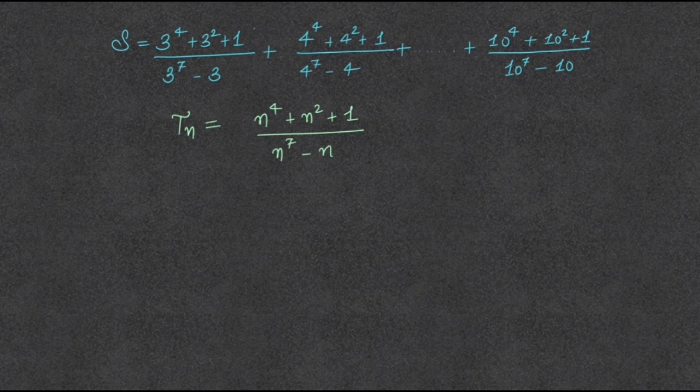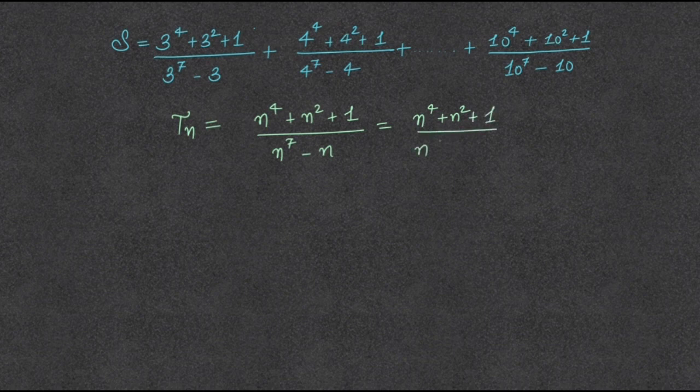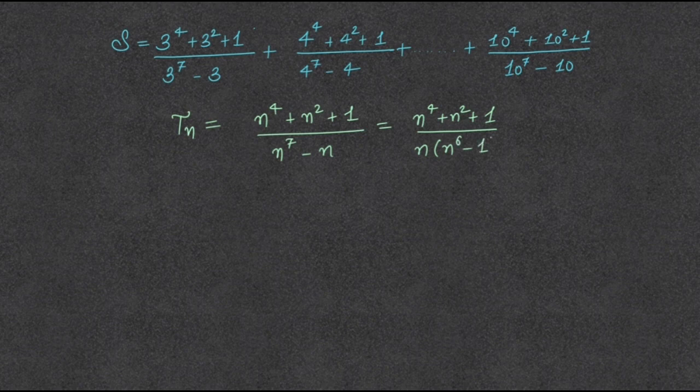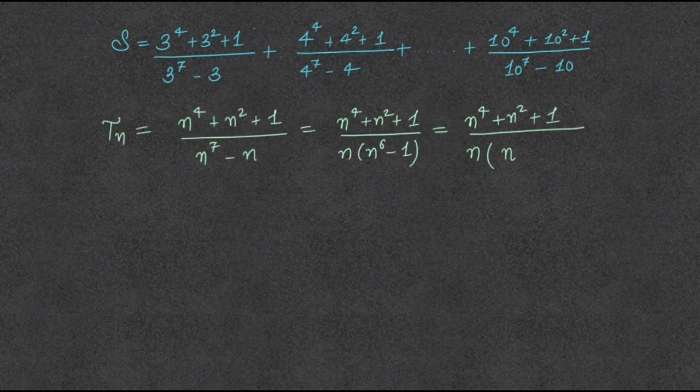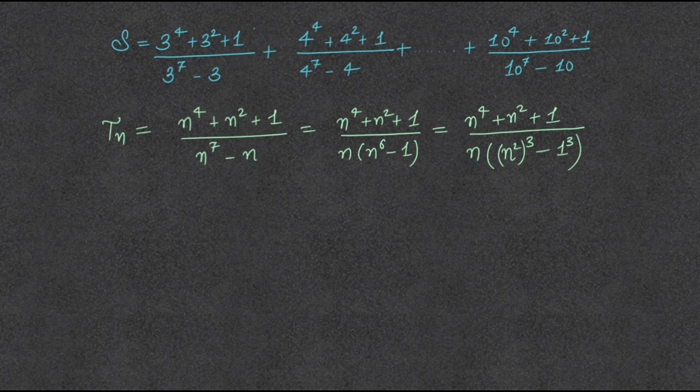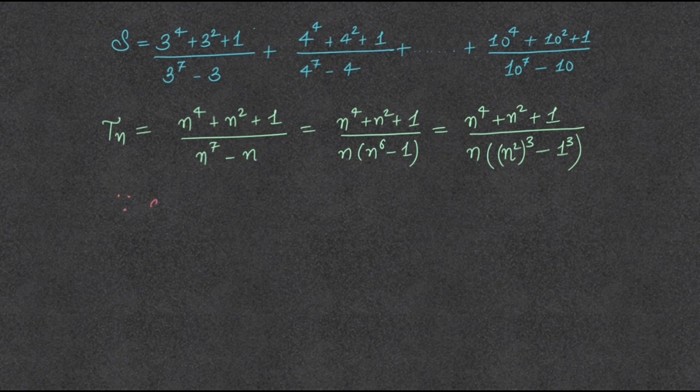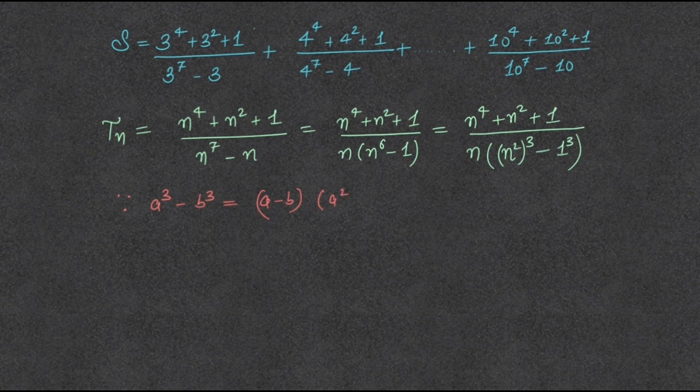Taking n common from the denominator, n to the power 6 can be written as n square to the power 3 and 1 to the power 3. Using identity a cube minus b cube, which is a minus b into a square plus ab plus b square.